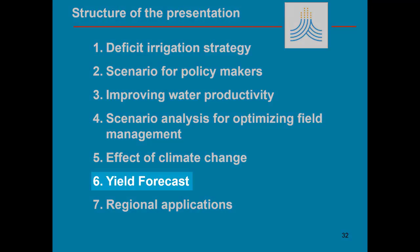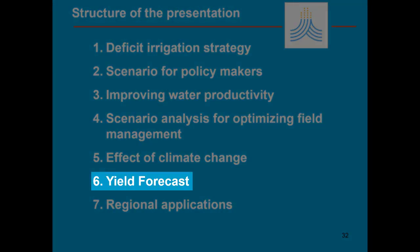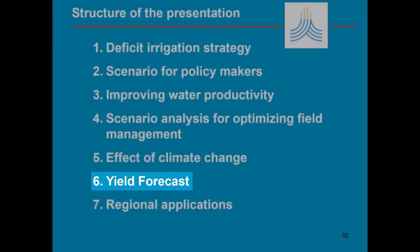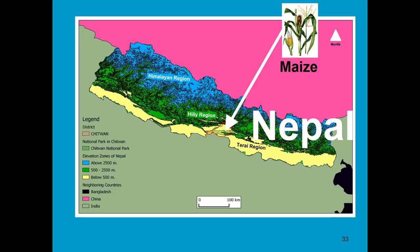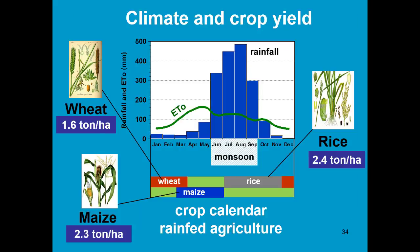In this part of the training module we look at an example of yield forecast. The example is worked out for the Terai region in Nepal in which maize is cultivated. As representative region, Chitwan was selected. In the Terai, people grow rice during the monsoon season in which 80% of the rainfall occurs. The monsoon runs from June till September.